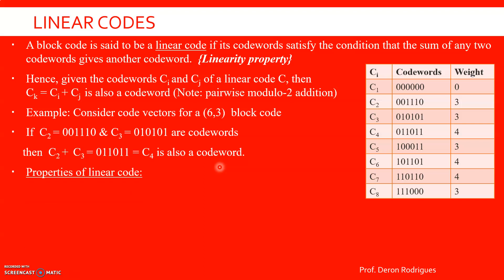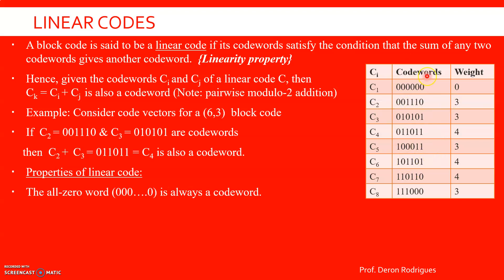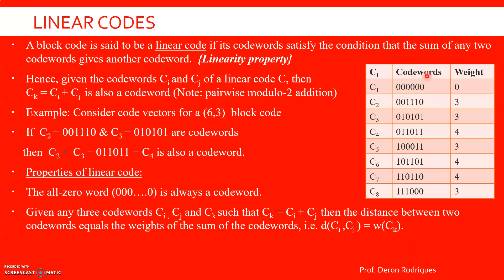What are the properties of a linear code? There are three properties. First property: the all-zero word is always a code word. In our example, the all-zero code word is present — all 6 bits are 0 — so the first property of a linear code is satisfied. Second property: given any three code words C_i, C_j, and C_k such that C_k = C_i + C_j, the distance between two code words equals the weight of their sum. That is, the distance between C_i and C_j is the same as the weight of the resultant code word C_k.